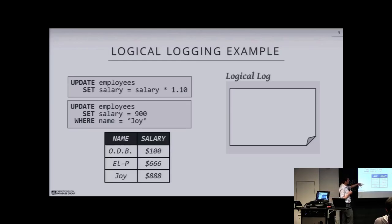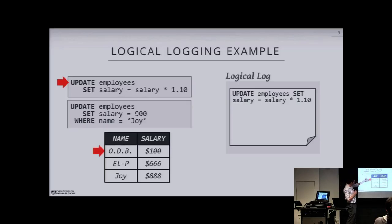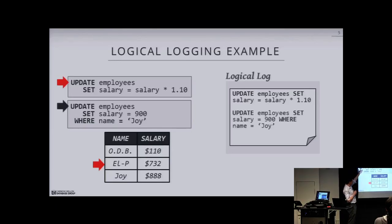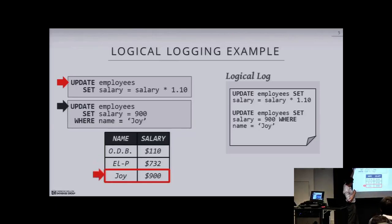Now for clarifications on questions from last week. Alex had a question about whether logical logging would still work with snapshot isolation. The example I showed before was running two transactions on a lower isolation level like read committed. Under snapshot isolation, the first transaction starts running and we'd append the exact query to our logical log. The cursor would move through tuples updating them one by one — we'd get to the first, update it, get to the second, update it.